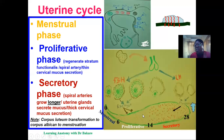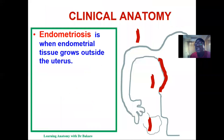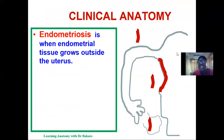This degeneration continues into the menstrual phase, which is the shedding of the endometrium. The cycle then continues from the menstrual phase to the proliferative phase, to the secretory phase, and back again to the menstrual phase.